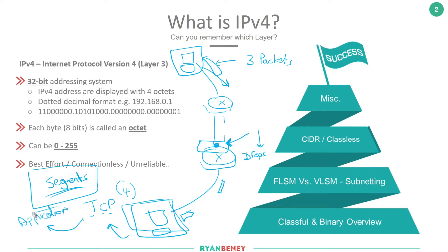Hopefully that packet reaches the destination and the segment is reconstructed. So when we think about IP as a protocol, we consider it best effort, connectionless, and unreliable. In order to have reliability, we rely on the upper layer protocols to provide it. When we say best effort, we mean IP does its best to ensure packets are not dropped, but there's no way through IP itself to guarantee that the packets are delivered.